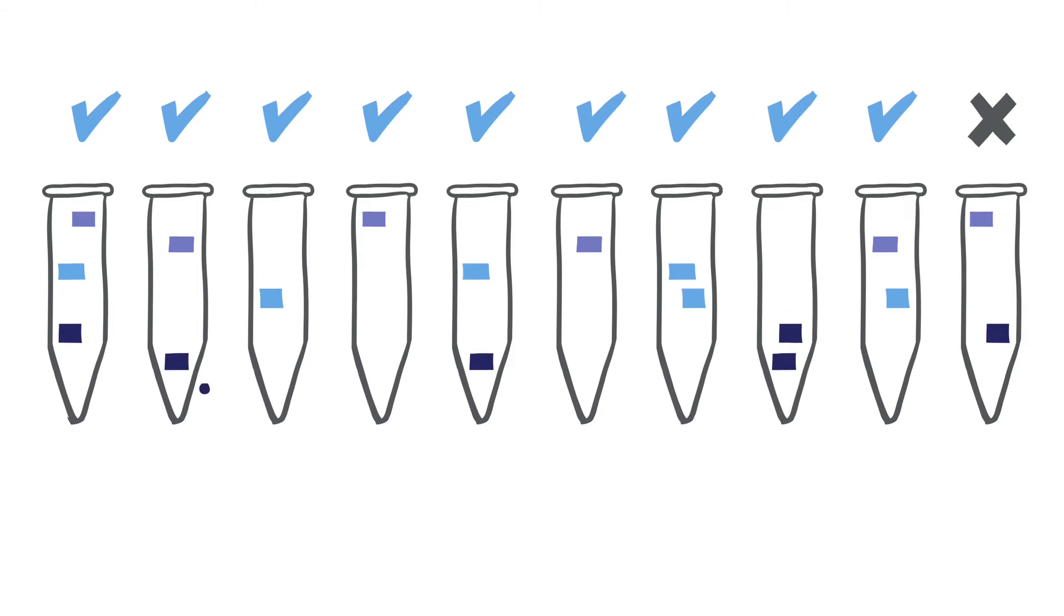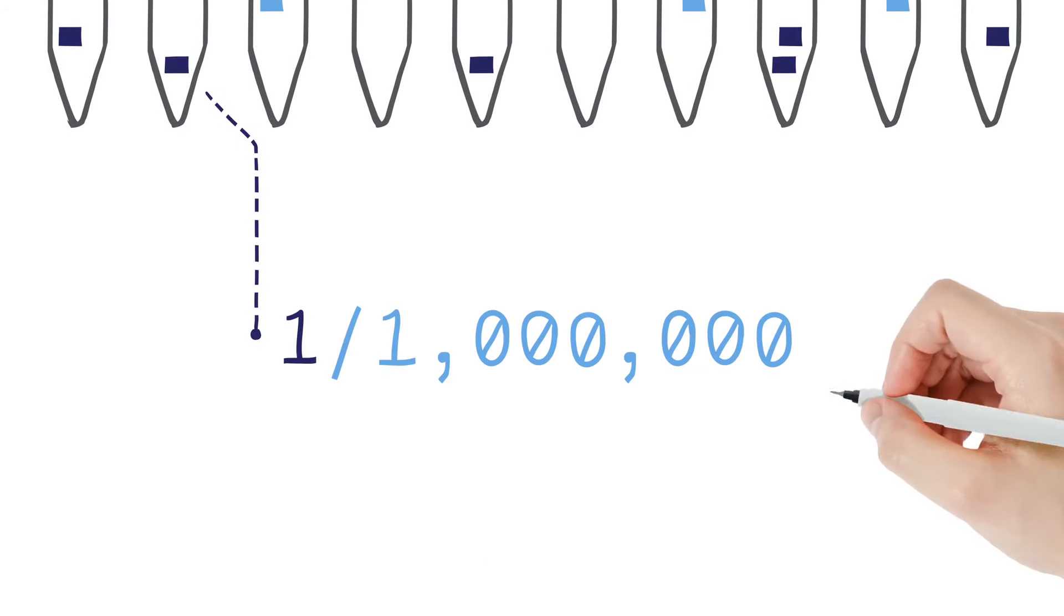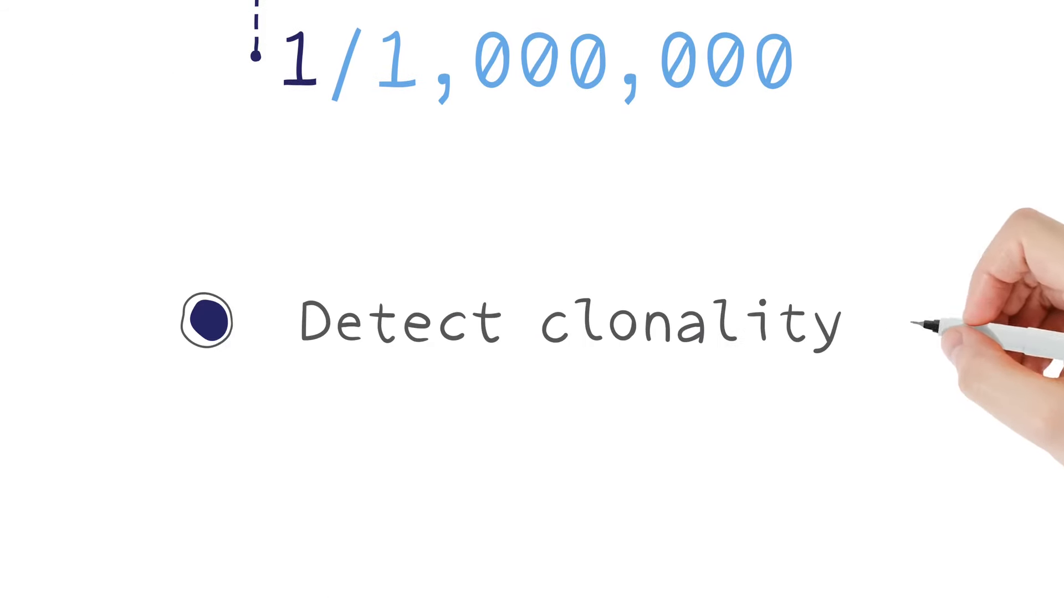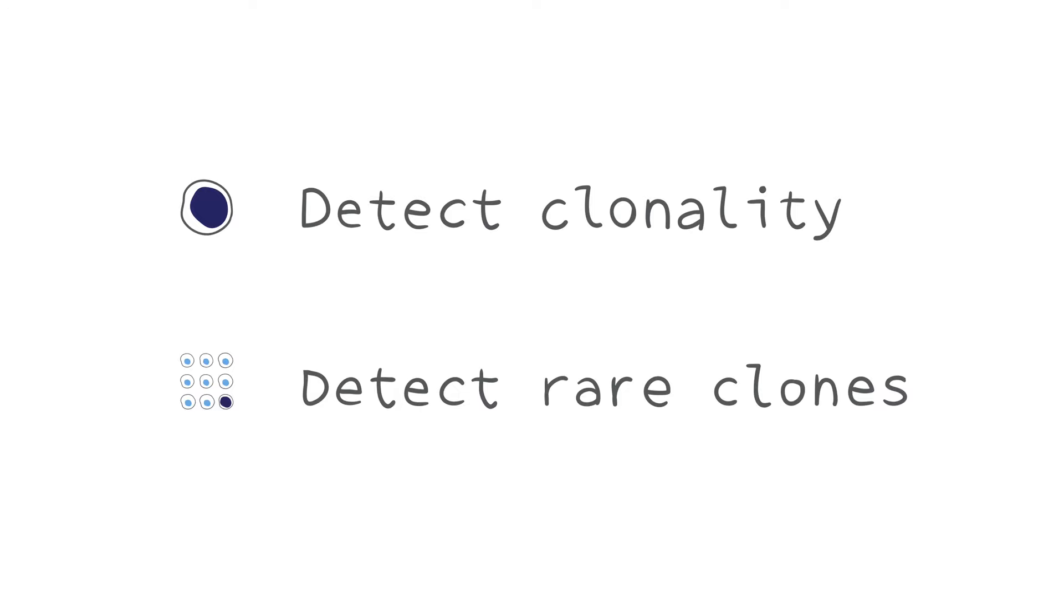Targeted deep sequencing provides a limit of detection as low as one in a million cells. With a single NGS assay, you can detect clonality and identify rare clones of interest.